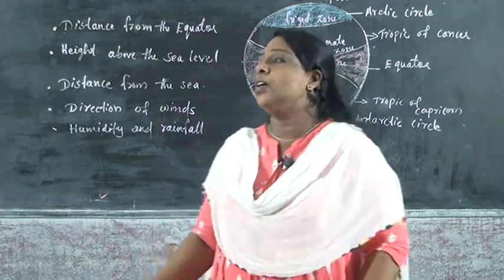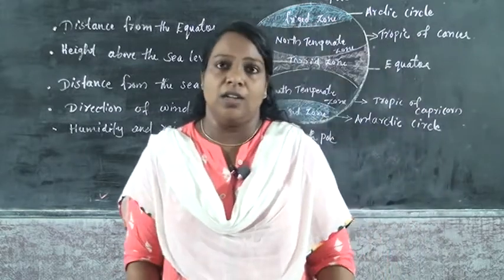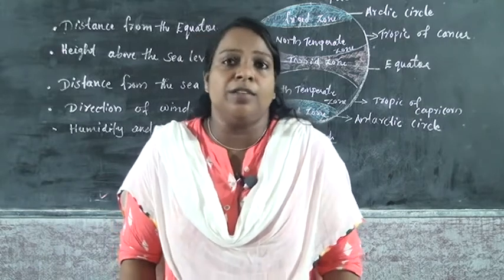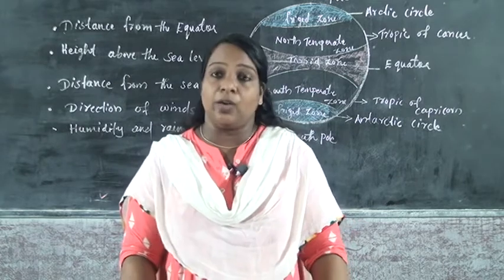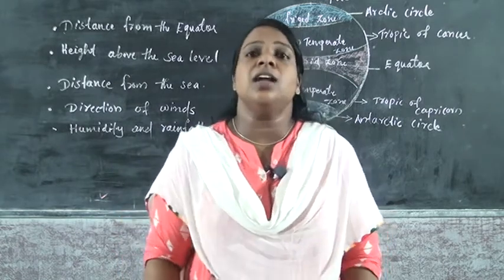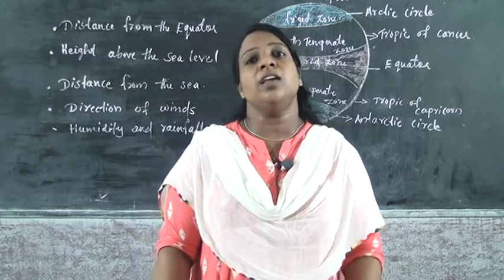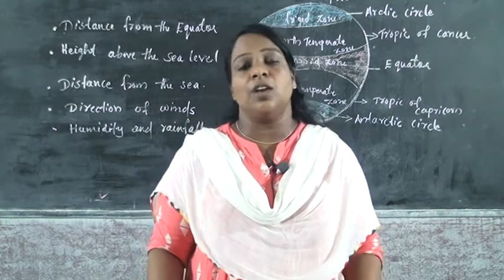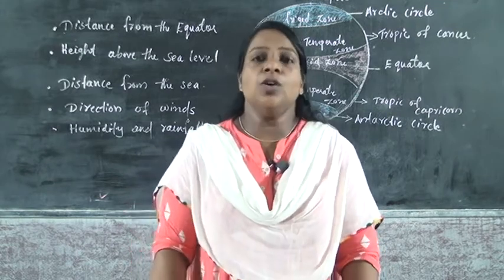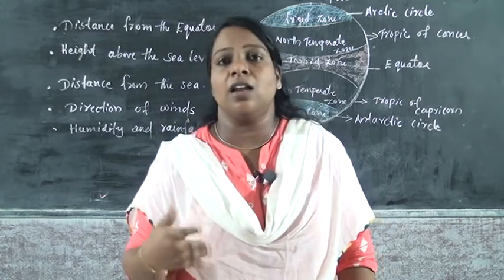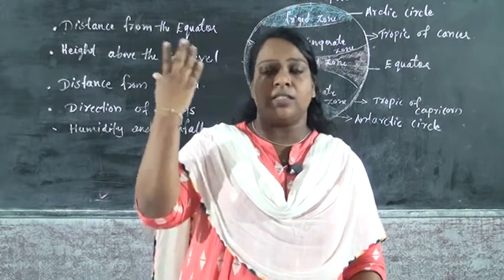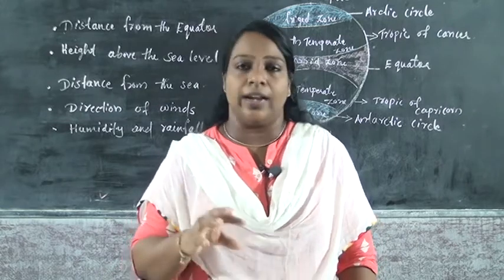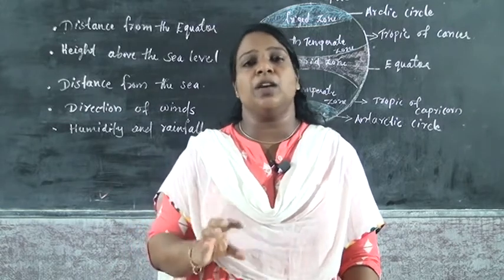The first one is distance from the equator. How does it influence the climate? The rays of the sun are vertical near the equator, so the places and areas near the equator receive more sunlight. The sun rays are slanting near the north pole and south pole, and they receive very less sunlight, so those areas become very cold.